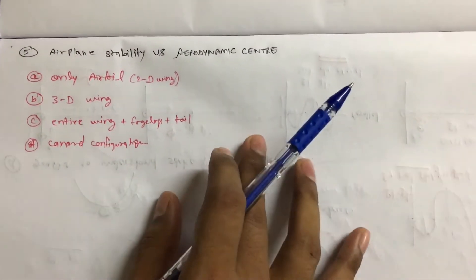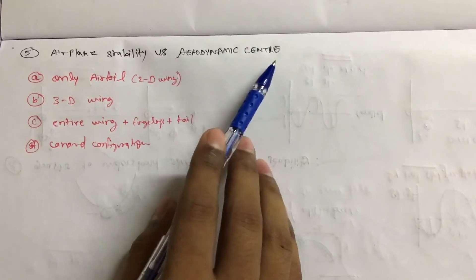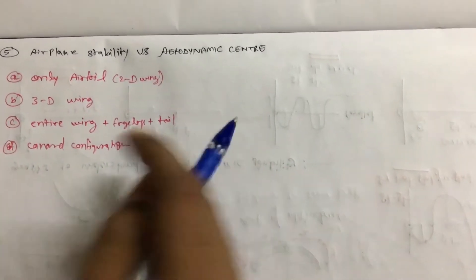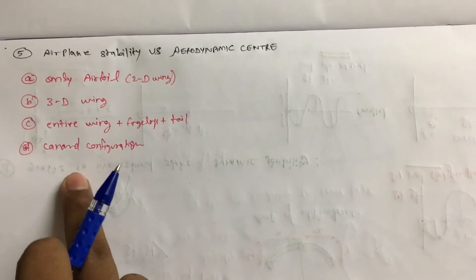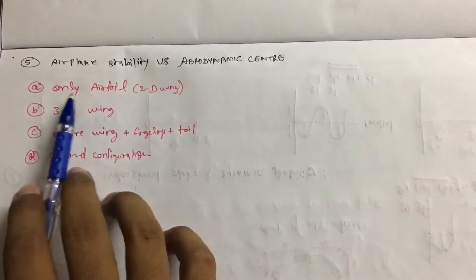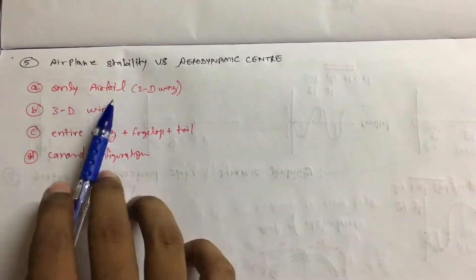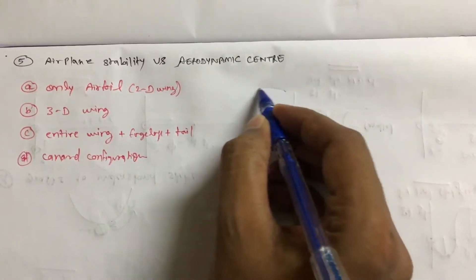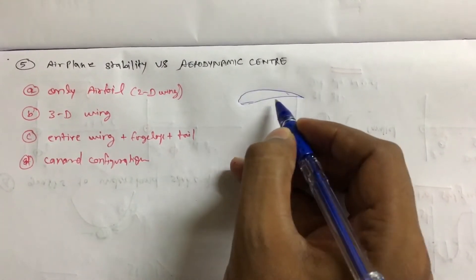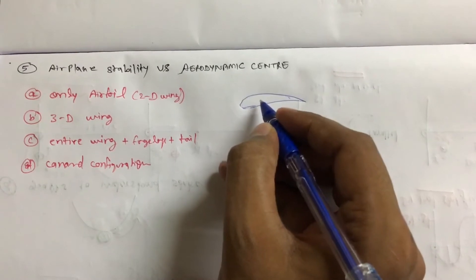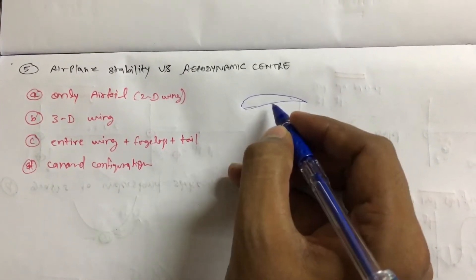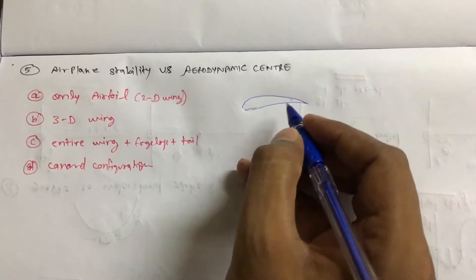In this video I will not discuss what is aerodynamic center — I will make another video for that. Right now we are going to discuss about four configurations. First: only airfoil. If we have an airfoil, then this airfoil will be having its aerodynamic center somewhere, which I will let you know right now.